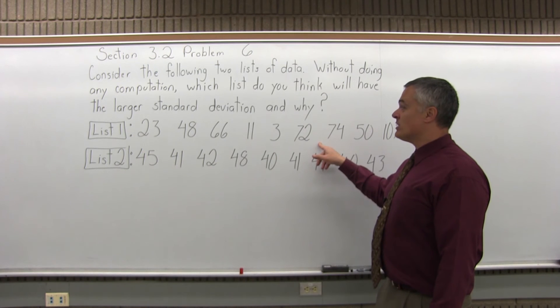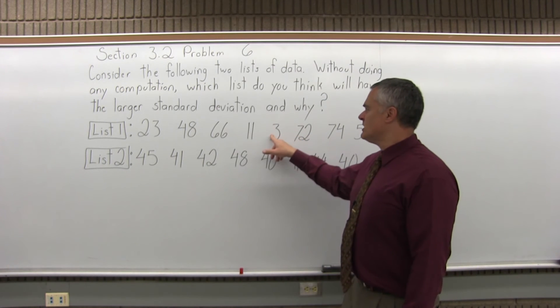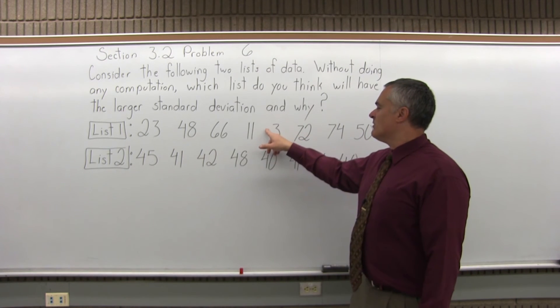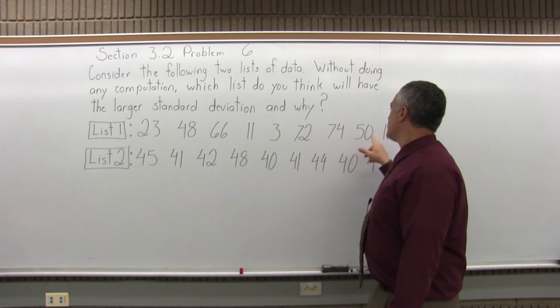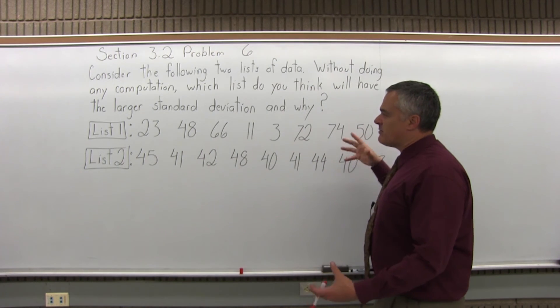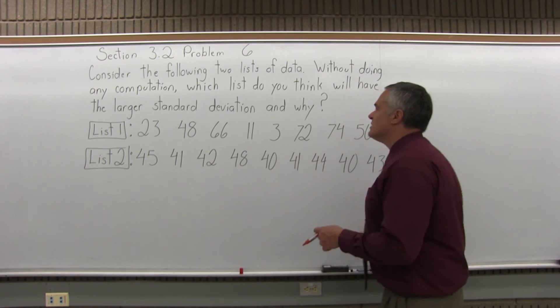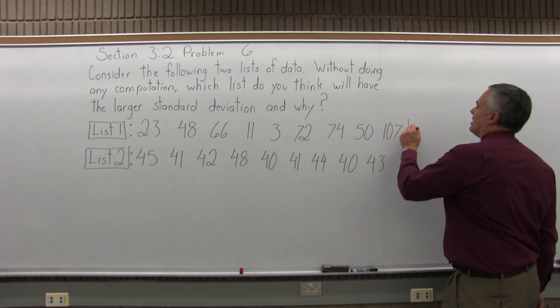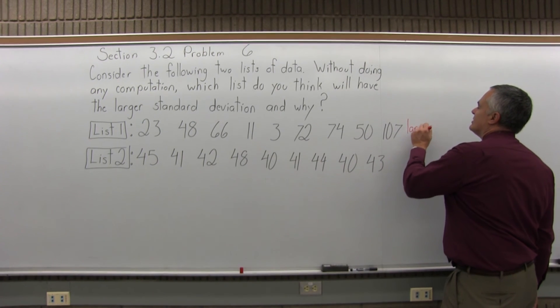List 1 is more spread out. The numbers really go up and down. You have some very small numbers here, 3, there's one that's over 100, they're going up and down a lot, they're very spread out. So list 1 will have the larger standard deviation.